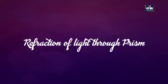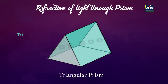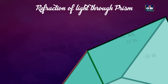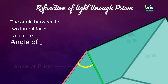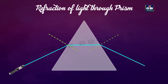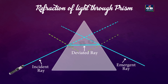Refraction of light through a prism: a triangular prism has two triangular bases and three rectangular surfaces inclined to each other. The angle between its two lateral faces is called the angle of the prism. When laser light passes through the prism at some angle, the light rays get deviated and emerge from the other side. The angle between the extended incident ray and the emergent ray at their meeting point is called the angle of deviation.